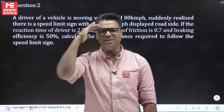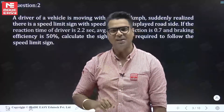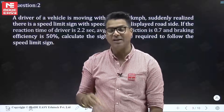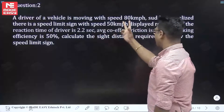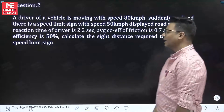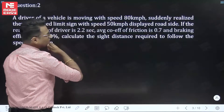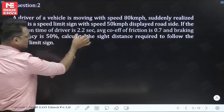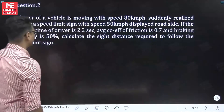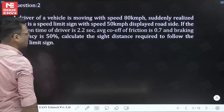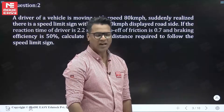You must have experienced this while moving on a road — you're moving at high speed and suddenly see a signboard with a lower speed limit. The same situation is given here. The reaction time of the driver is 2.2 seconds, the average coefficient of friction is 0.7, and the braking efficiency is 50%. Calculate the sight distance required to follow the speed limit sign.